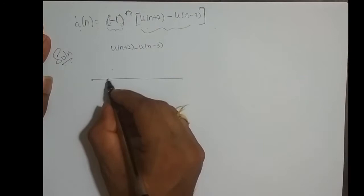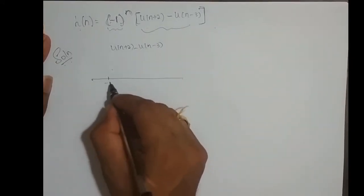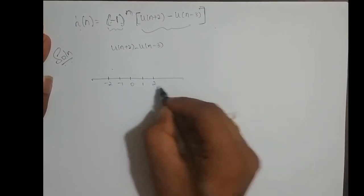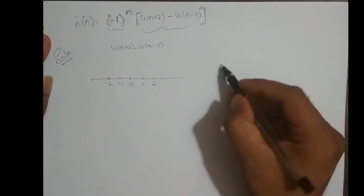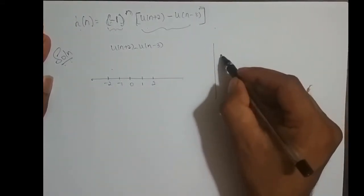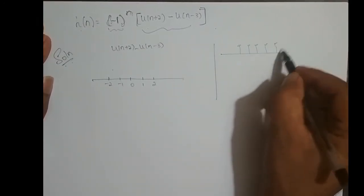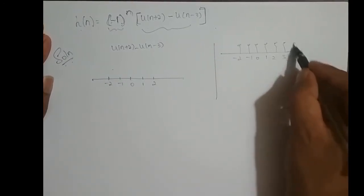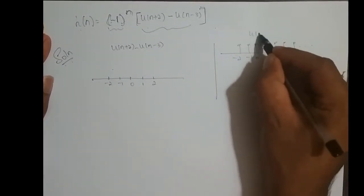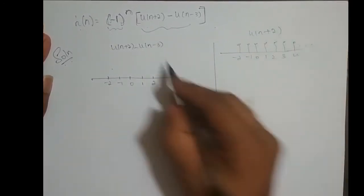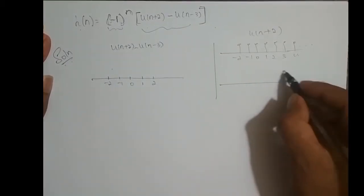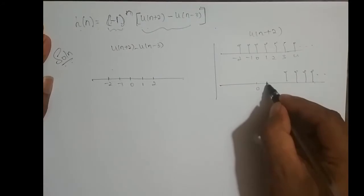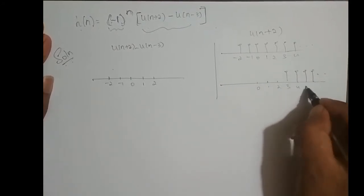What is u of n plus 2 minus u of n minus 3? It starts from minus 2, minus 1, 0, 1, 2. How is this? u of n plus 2 is u of n shifted left 2 times, so it starts from minus 2, minus 1, 0, 1, 2, 3, 4 and goes on. And u of n minus 3 is u of n shifted right 3 times, starting at 0, 1, 2, 3, 4, 5.